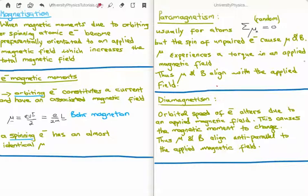Let's define paramagnetism and diamagnetism. For paramagnetism: usually the sum of magnetic moments for atoms is zero and oriented in random directions. But for elements with an unpaired electron, the unpaired electron has its own magnetic moment and field. If we apply an external magnetic field, these magnetic moments experience a torque in the applied field. The magnetic moment and its associated field align with the applied field, and since every atom with an unpaired electron constitutes a small dipole, they all point in the same direction, superpose, and we get magnetization.